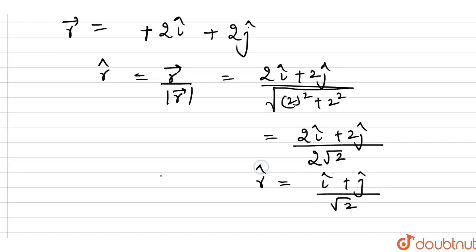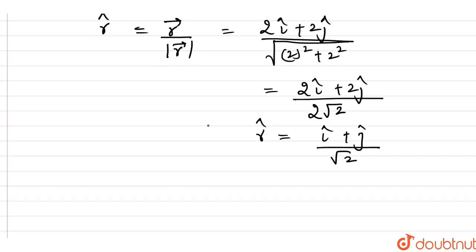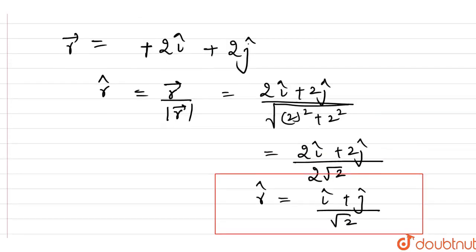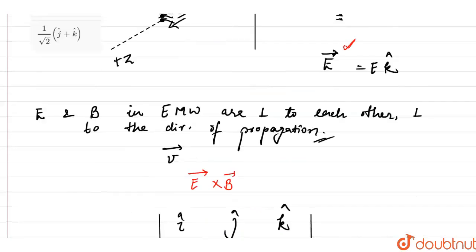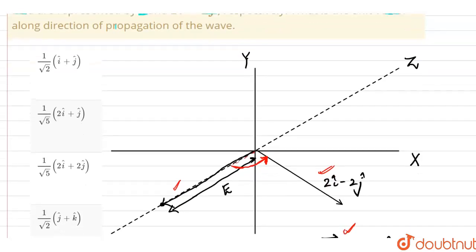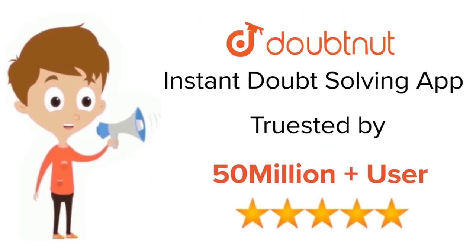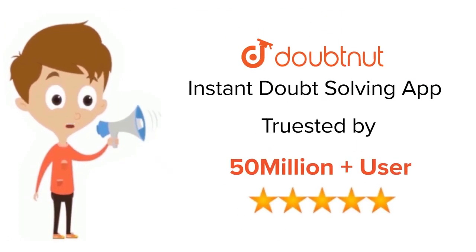This is the direction of the velocity vector, or the direction of propagation of the wave. Comparing with the options, (i-cap plus j-cap) divided by root 2 matches option A, so option A is correct. For class 6 to 12, IIT-JEE and NEET level — trusted by more than 5 crore students. Download the DoubtNet app today.